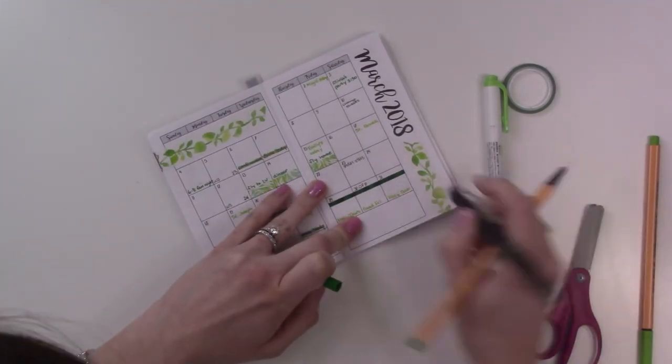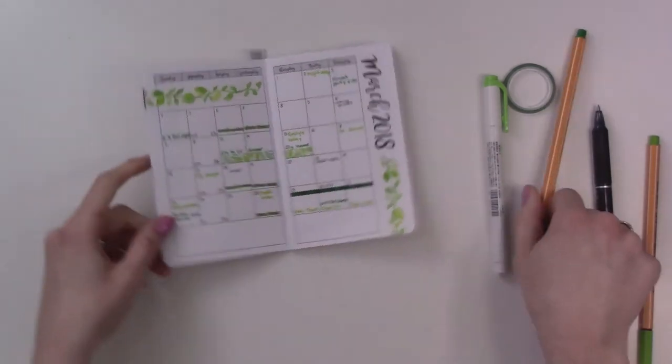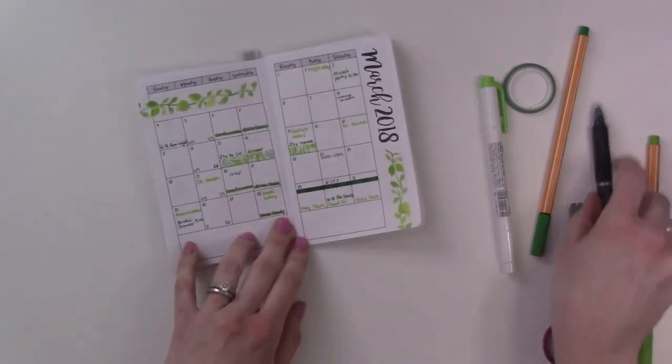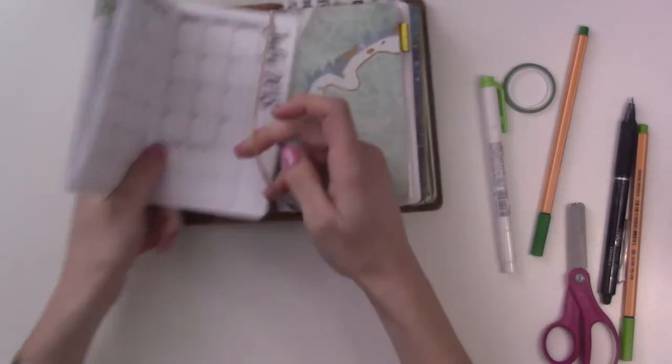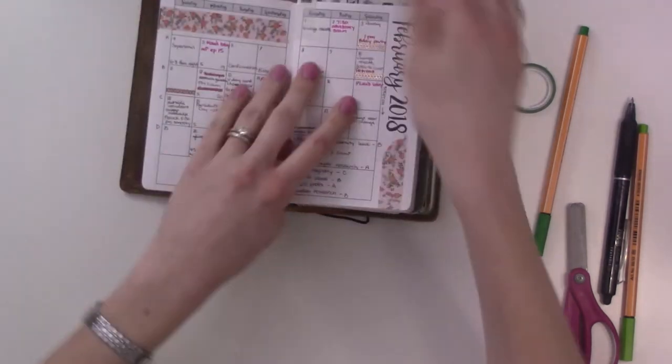The bottom boxes on both sides are where I'm going to put my to-do list as things come up, but in the meantime, we're all set and this is what March looks like.